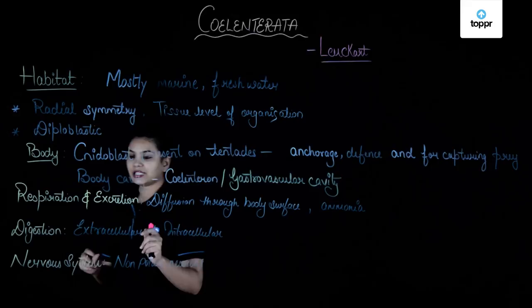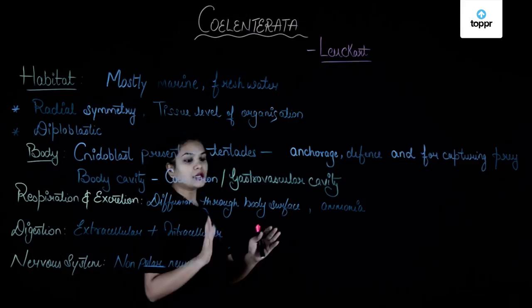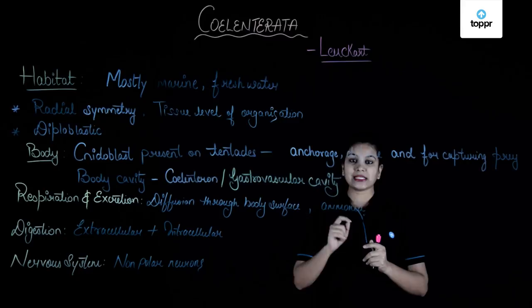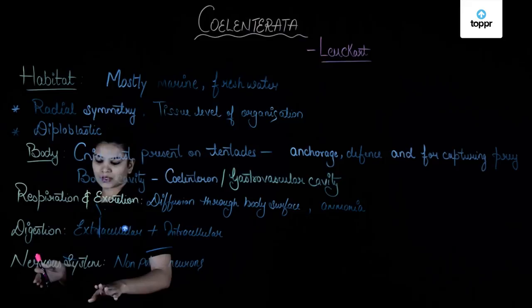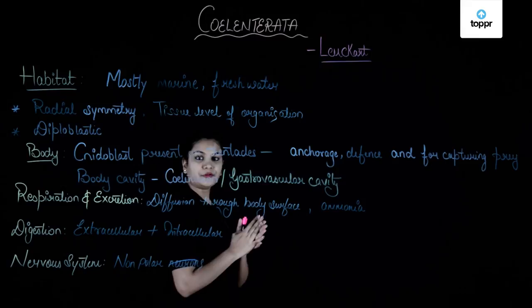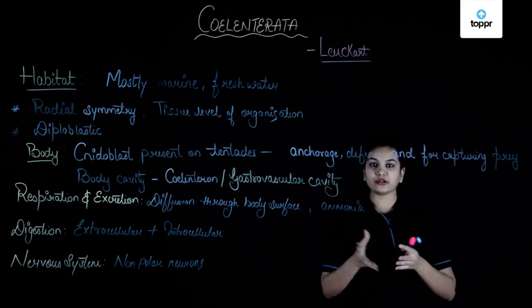Respiration and excretion take place by simple diffusion with the help of the body surface, and the excretory matter of coelenterates is ammonia — because they are present in a lot of water. Their nervous system is diffused, and non-polar type neurons are present, meaning they are not properly divided into cytons and dendrons.